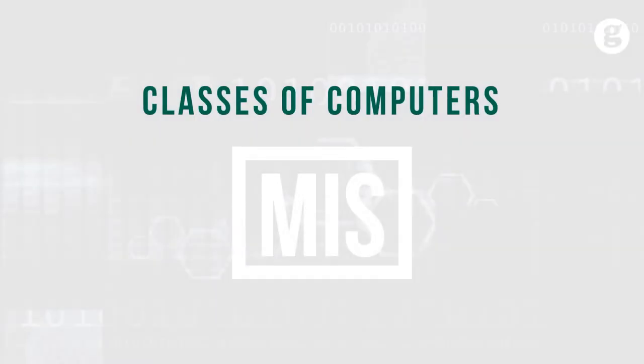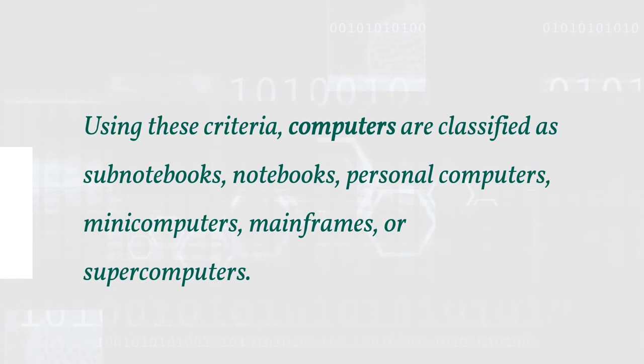Usually, computers are classified based on cost, amount of memory, speed, and sophistication. Using these criteria, computers are classified as sub-notebooks, notebooks, personal computers, mini computers, mainframes, and supercomputers.